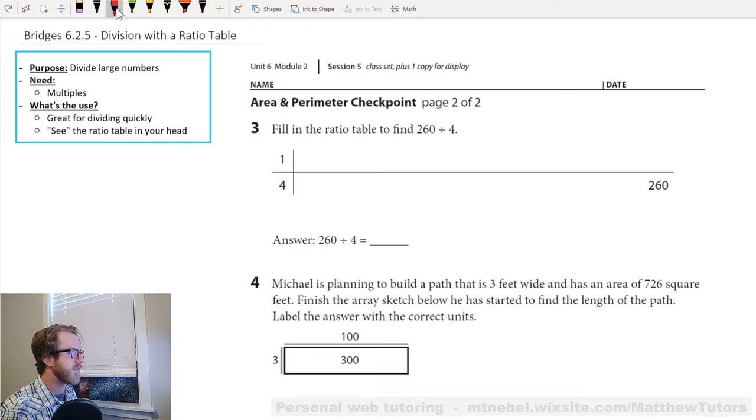So the problem that they have for us, we're going to be working on number three on our area and perimeter checkpoint. The problem they have for us is fill in the ratio table to find 260 divided by four. You'll notice at the end they have 260 and if we're going from here to here we're multiplying by four which means if we're going from here to here we're dividing by four. So really what we're trying to figure out is 260 divided by four equals what? So at the end of our ratio table we should, hopefully, we should have this all filled out and we'll have a nice pretty number down there.